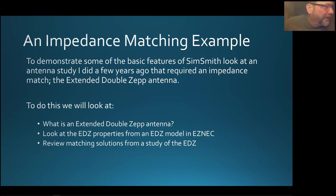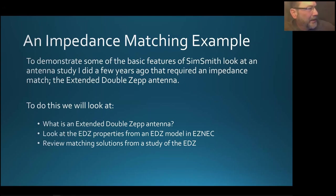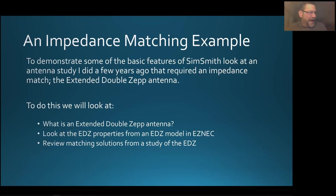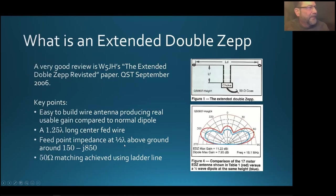Now I thought I'd show some matching that we can do. A couple of years ago I did a study on an antenna called an extended double ZEP antenna, so I'll use that as a good example for how to match stuff. We'll look at what a double ZEP is, look at some properties from the model, and then review how we can do some matching with it.